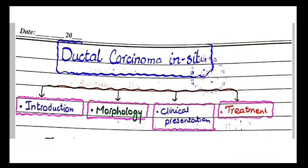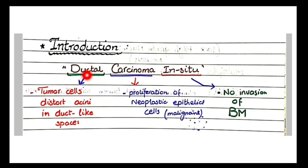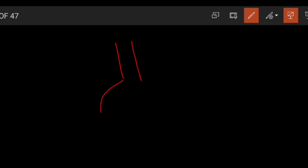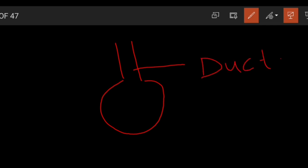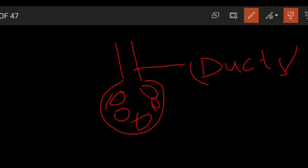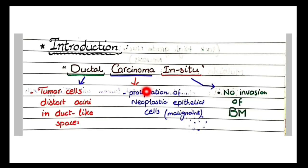Now, what does the word 'ductal' mean? In ductal carcinoma in situ, the word ductal means the tumor cells distort the acini into duct-like spaces. For example, if this is a terminal duct opening into an acinus, ductal carcinoma in situ arises from the cells of these ducts, and the atypical neoplastic cells convert this acinus into a duct-like space — a narrow slit.